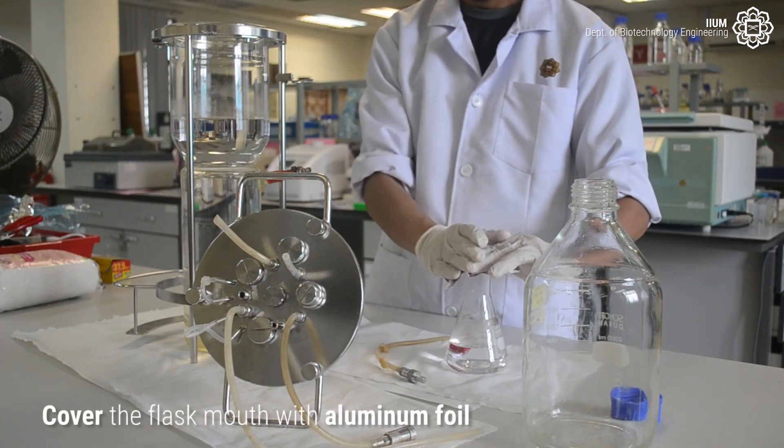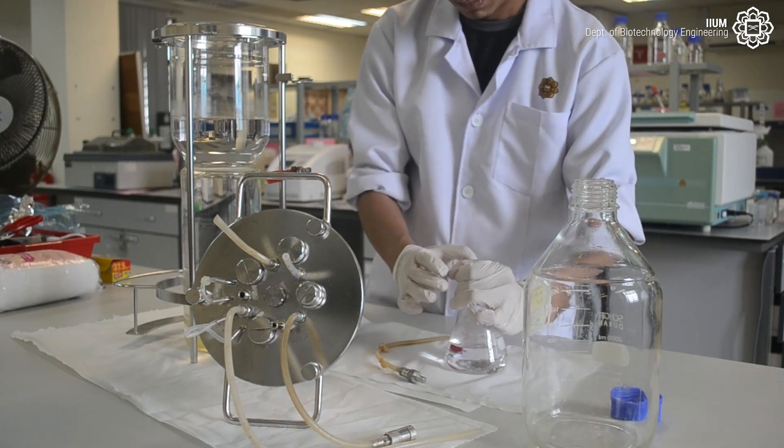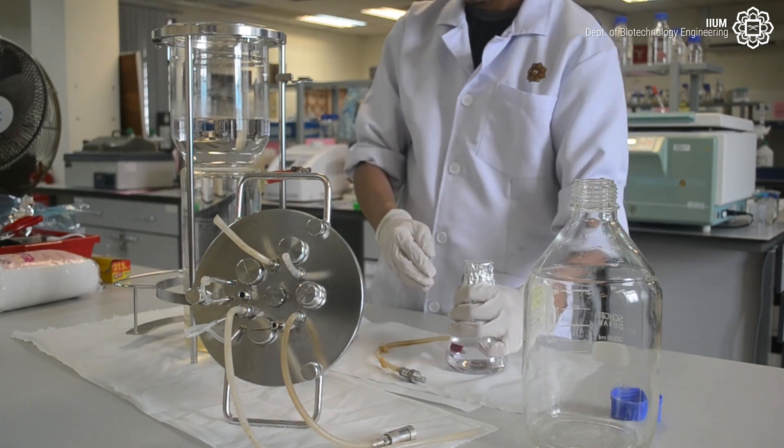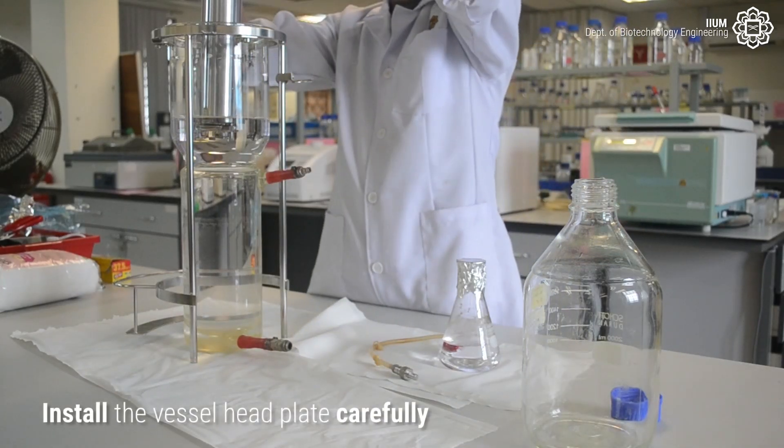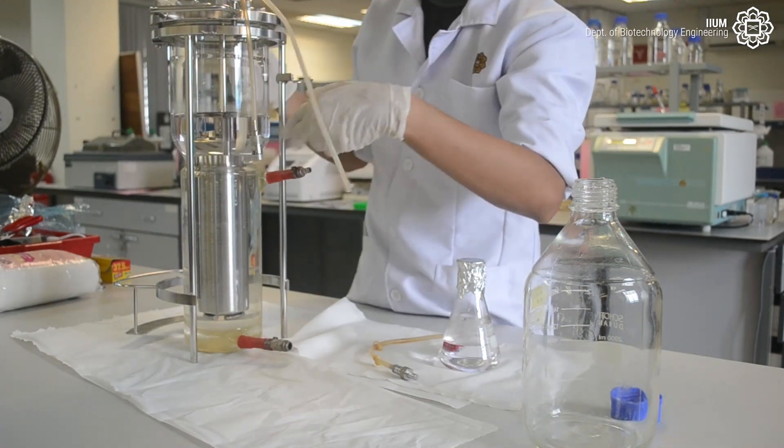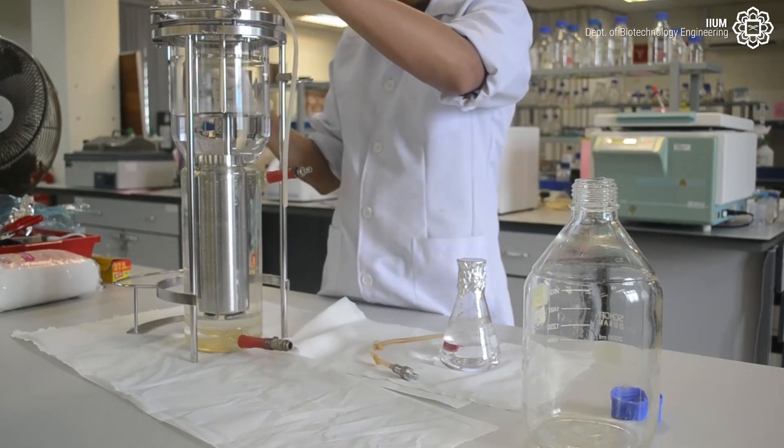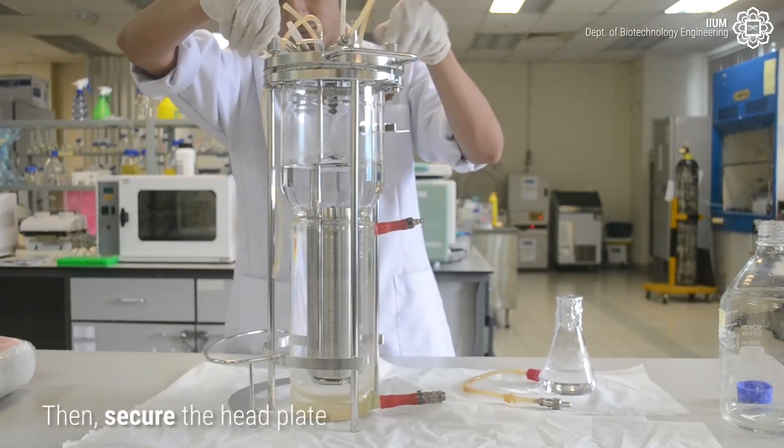Cover the flask mouth with aluminum foil. Install the vessel head plate carefully. Then secure the head plate.